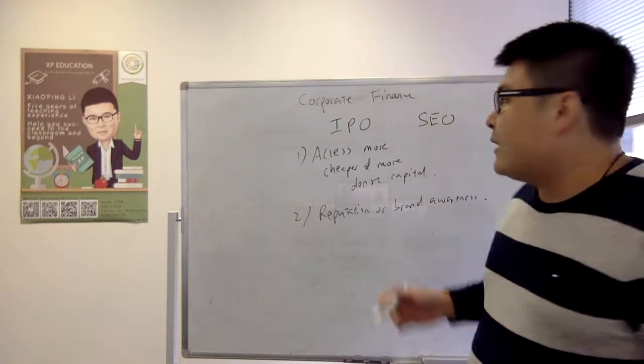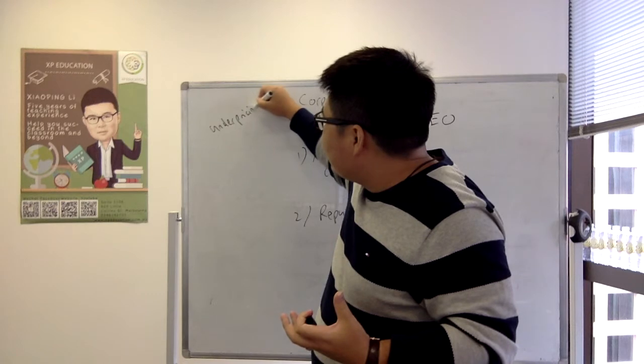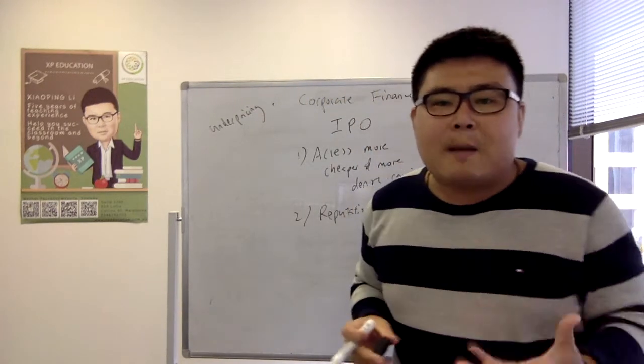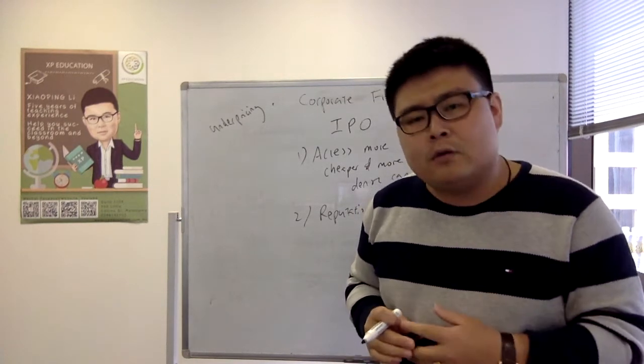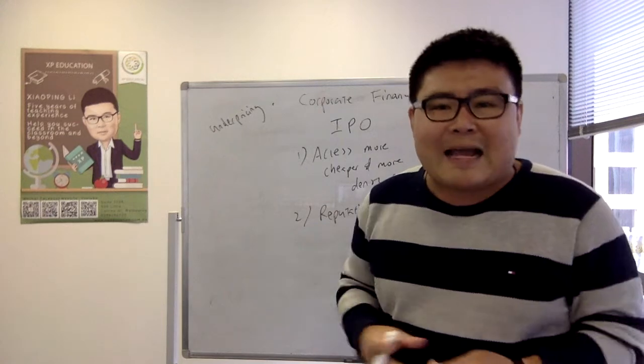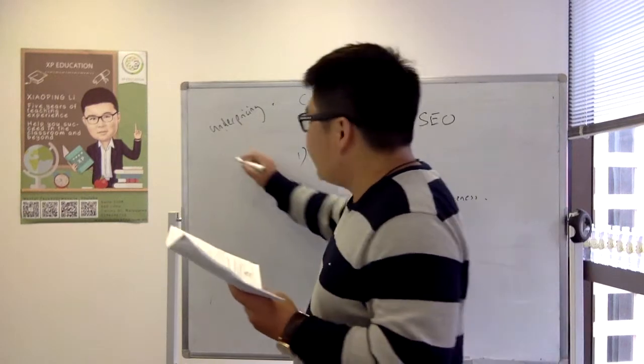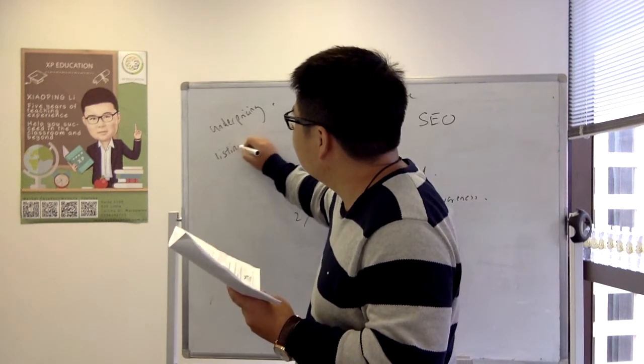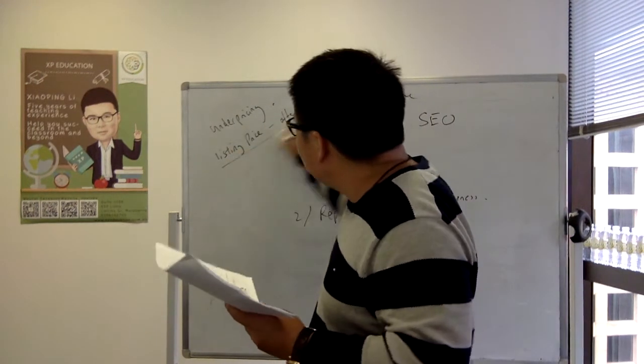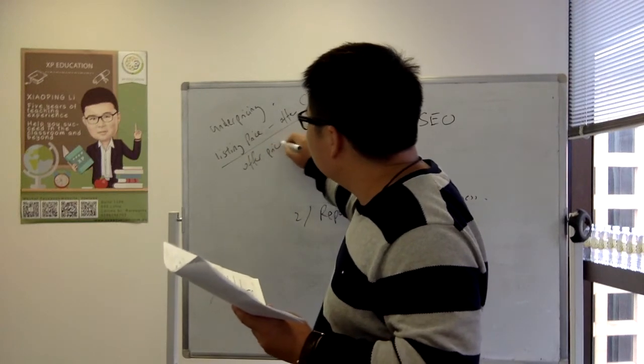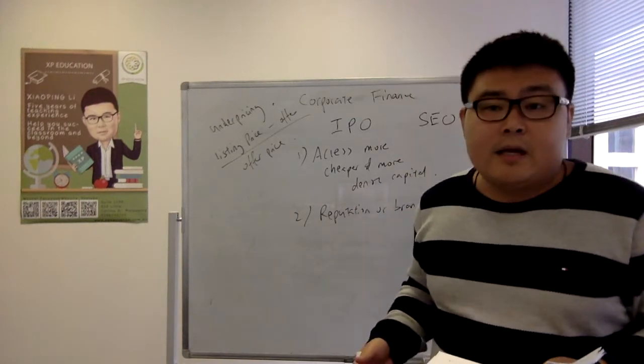Now, one of the phenomenons I wanna talk about in terms of IPO is about the key topics about under pricing. Now, under pricing is something that is very relevant and also very important in your course of studies. Now, first of all, I wanna say, what exactly is under pricing? Now, the example such that the under pricing is essentially saying that the listing price take away the offer price, divided by the offer price.